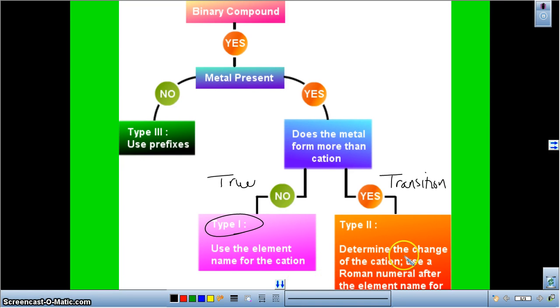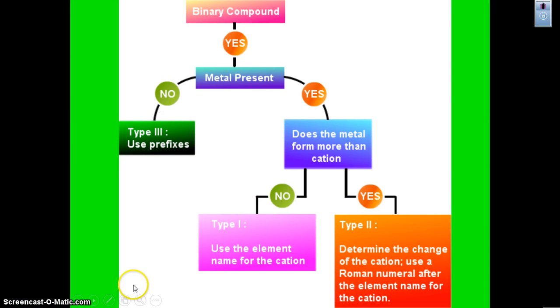For the Type 2, we're going to have to determine the charge of the cation, and we're going to use a Roman numeral. So the big thing is identifying what type of a compound you're dealing with. So today we're going to focus on Type 2.